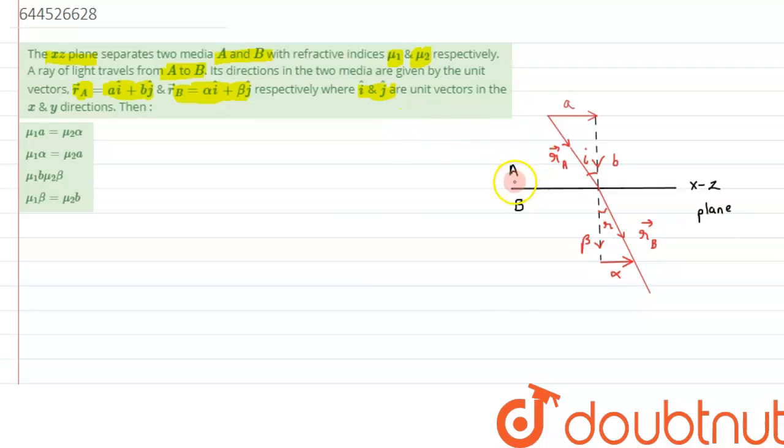A with refractive index mu1, so let's write it as mu1 over there, and medium B having a refractive index mu2. All right, and as we can see the position vector of ra, that is ai cap plus bj cap...